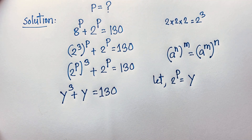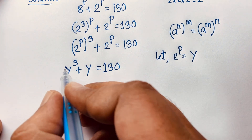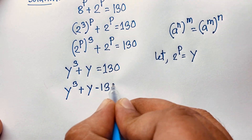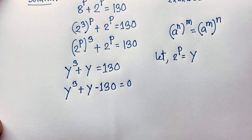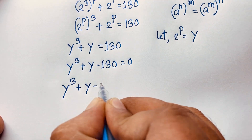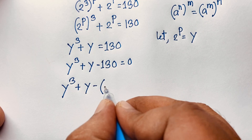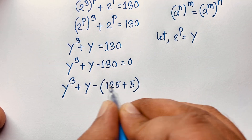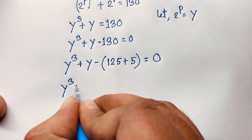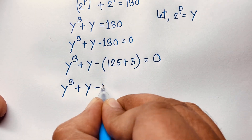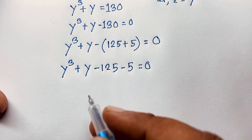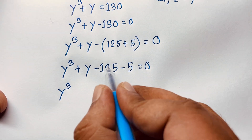Now I evaluate this cubic equation: y³ + y − 130 = 0. I notice that 130 can be written as 125 plus 5, so the equation becomes y³ + y − 125 − 5 = 0.